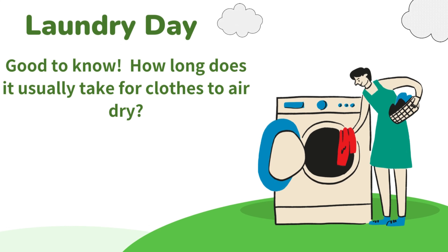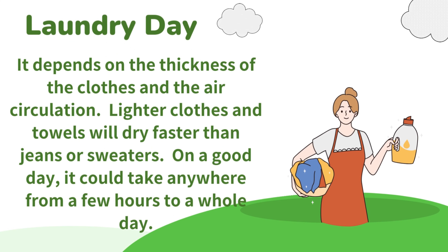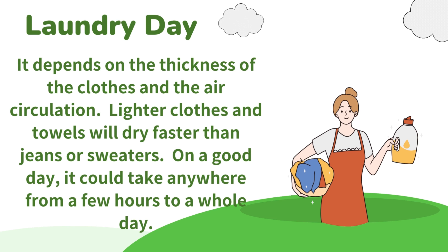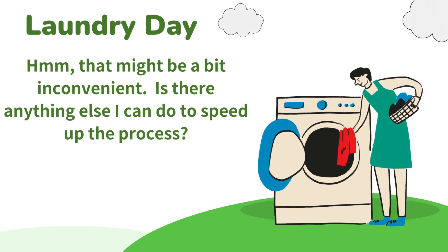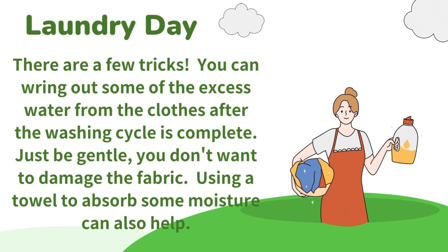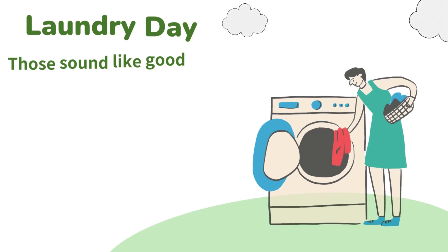Good to know. How long does it usually take for clothes to air dry? It depends on the thickness of the clothes and the air circulation. Lighter clothes and towels will dry faster than jeans or sweaters. On a good day, it could take anywhere from a few hours to a whole day. That might be a bit inconvenient. Is there anything else I can do to speed up the process? You can wring out some of the excess water from the clothes after the washing cycle is complete. Just be gentle — you don't want to damage the fabric. Using a towel to absorb some moisture can also help.